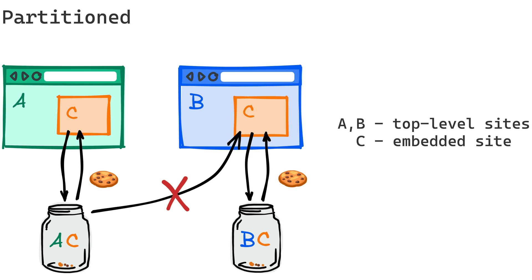A partitioned third-party cookie is linked to the site where it is first created and cannot be reused elsewhere. This ensures that cookies set by the third-party service are only usable within the same embedded context of the site where they were first created.